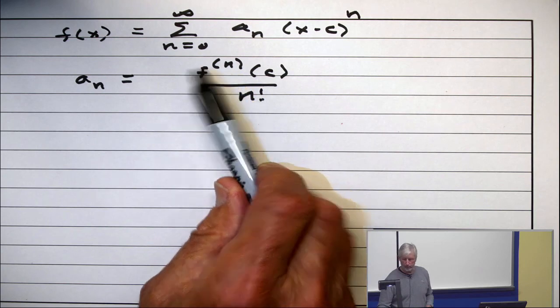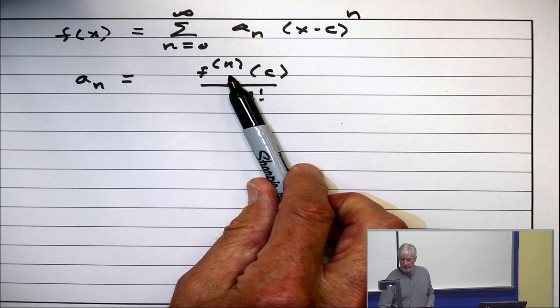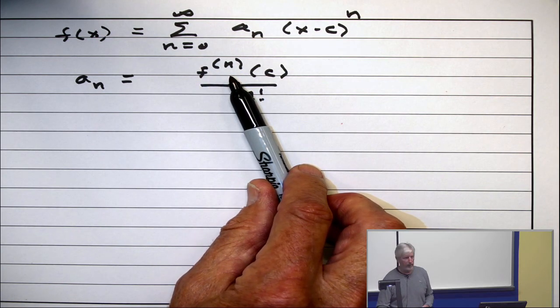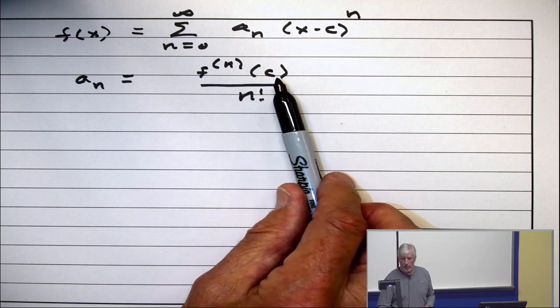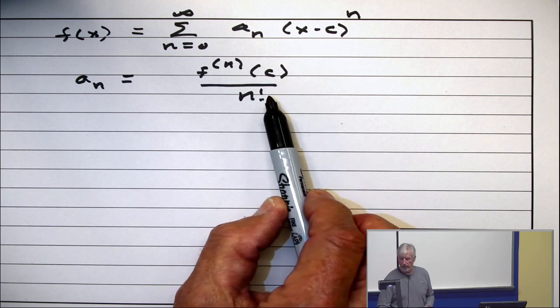It's the nth derivative—that notation right there is the nth derivative of f evaluated at c over n factorial.